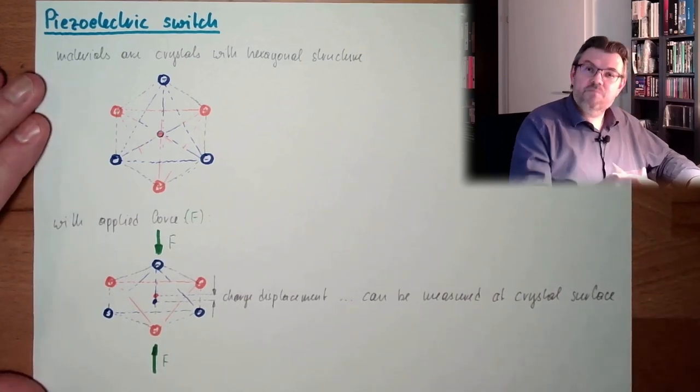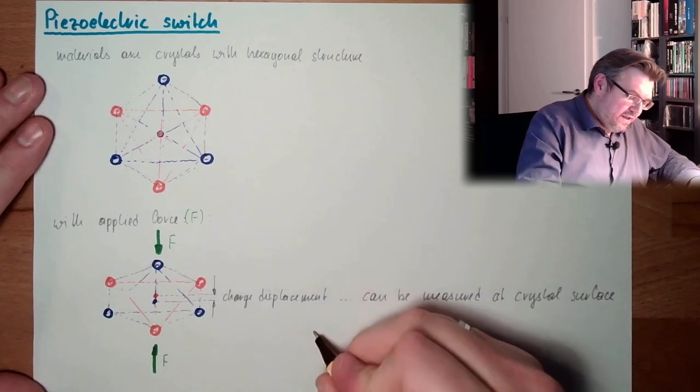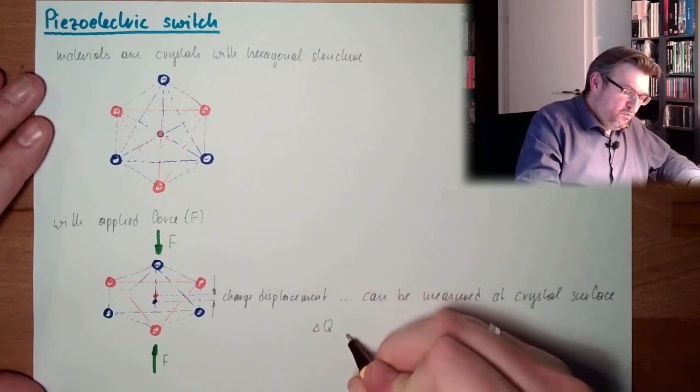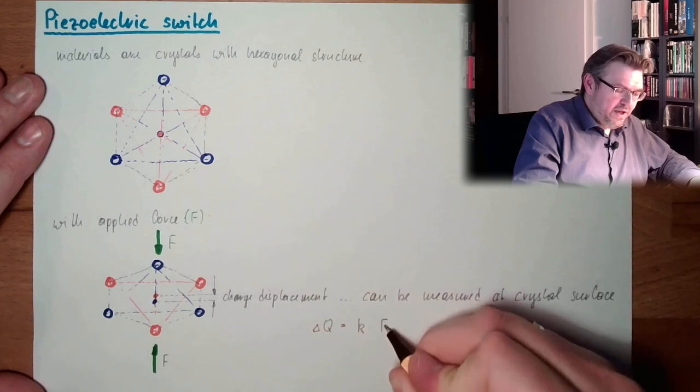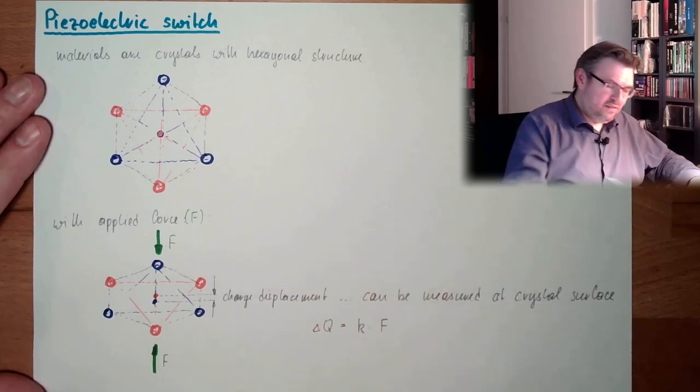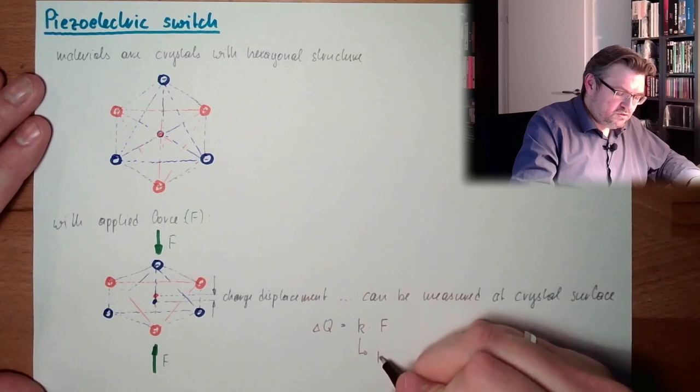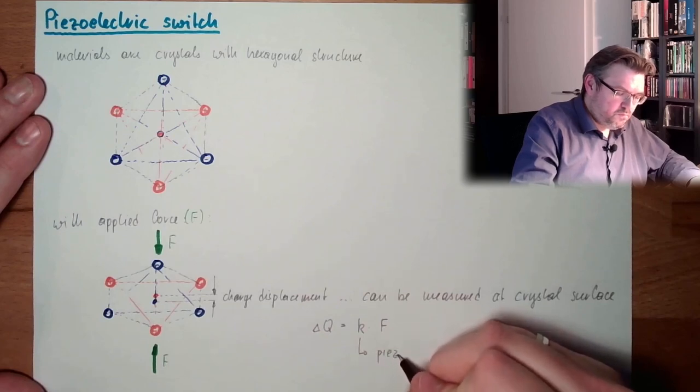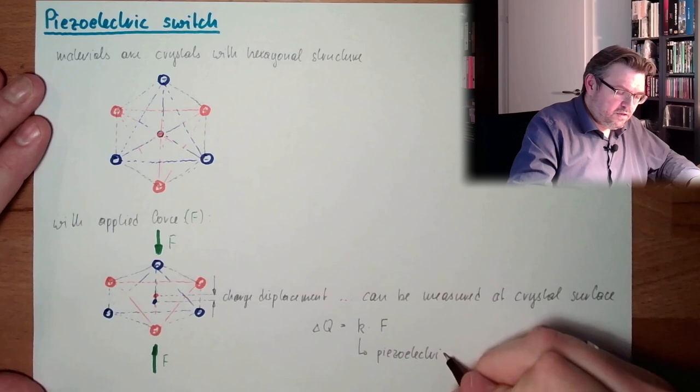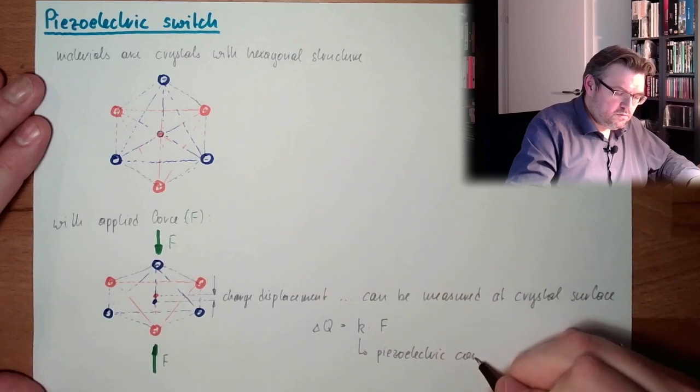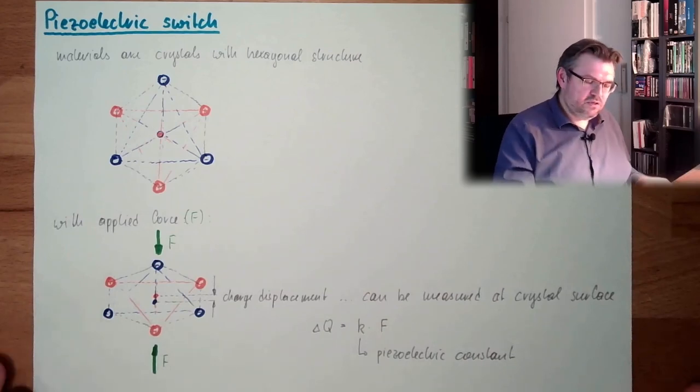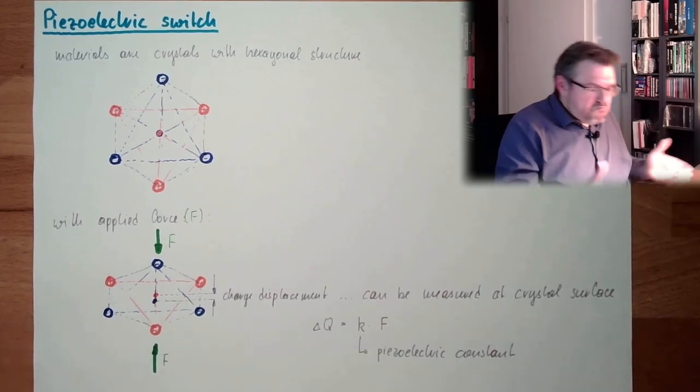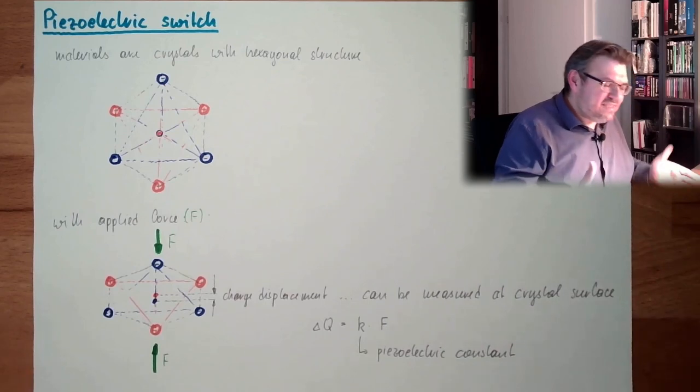And this delta Q, which you can measure, is some constant multiplied by the force. And this is the so-called piezoelectric constant. Depends on the material. There are several materials in use, and so on. This is how this is working.